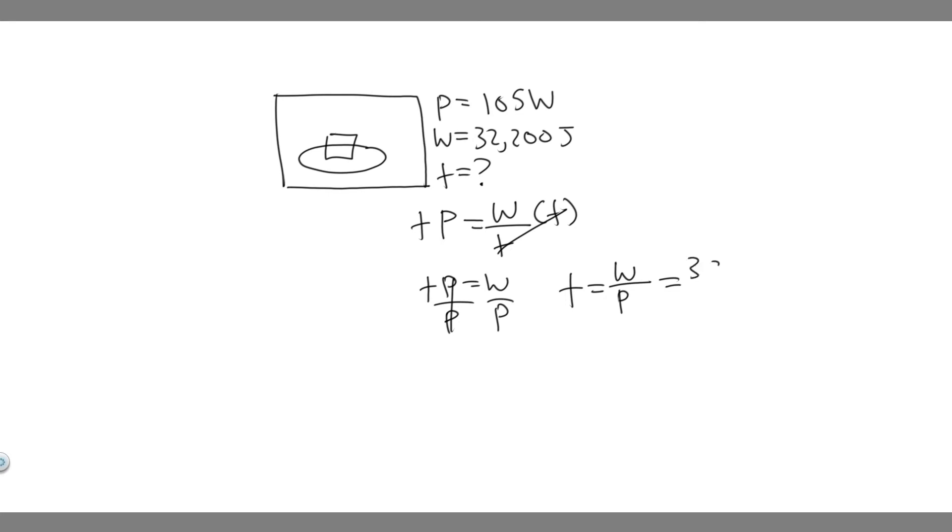The work is 32,200 and you divide by the power which is 105. So plug this in: 32,200 divided by 105. When you do that, you're going to get the time equals 306.6666 and so on.